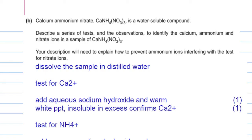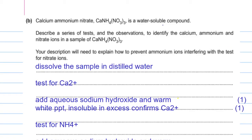In part B, calcium ammonium nitrate is a water-soluble compound. Describe a series of tests and observations to identify the calcium, ammonium, and nitrate ions. We have two cations and one anion to identify. For the identification of both calcium and ammonium cations, we will use aqueous sodium hydroxide. For nitrate ions, we use aqueous sodium hydroxide along with aluminium foil and heat the mixture.